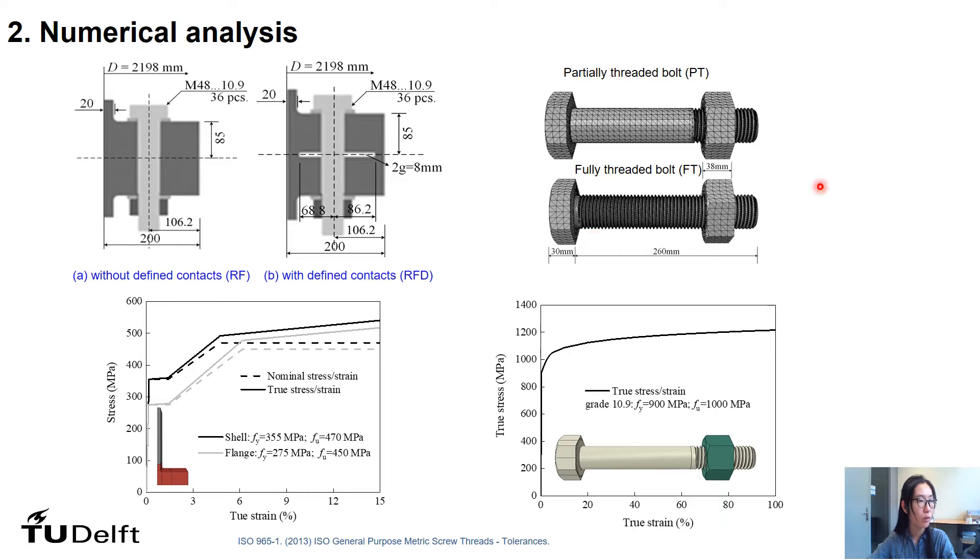In parallel, the influence of bolt types is also investigated here, including partially threaded bolt and fully threaded bolt. Material and geometry non-linearity are considered in FE analysis. The bolt and nut are modeled with real threaded geometry. The flange and shell are specified as S275 and S355 respectively. Bolt and nut are assigned to the nominal value of stress at the yield point of 900 MPa and ultimate strength of 1000 MPa.